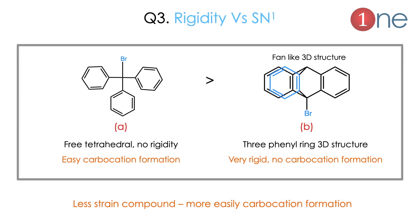Question 3: rigidity versus SN1. Structures A and B are given — A has a carbon connected to three phenyl rings, and B is a fan-like 3D bridged structure with a phenyl system. Carbocation needs planarity, but B is a rigid bridged structure and cannot form a carbocation. A can form and stabilize the carbocation. So SN1 reaction in A is faster than B. Lesser strain in the compound means easier cation formation.